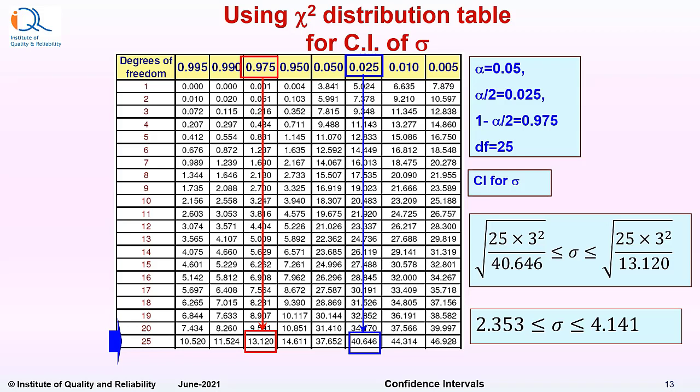So if we use these two values in the formula, we get confidence interval of 2.353 and 4.141. So the population sigma would range between these two values with 95% probability. So there is a 5% chance that the actual value of population standard deviation sigma would go beyond these two values either on the right side or left side.